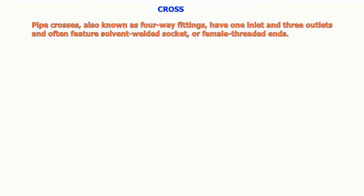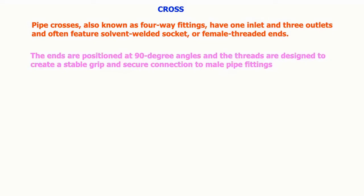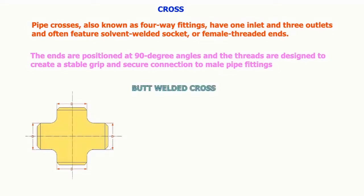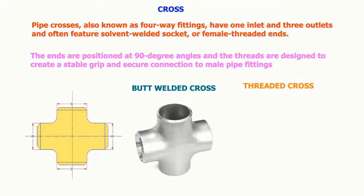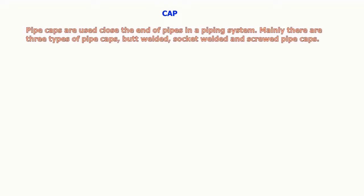Pipe crosses, also known as four-way fittings, have one inlet and three outlets and often feature solvent-welded socket or female-threaded ends. The ends are positioned at 90 degree angles and the threads are designed to create a stable grip and secure connection to male pipe fittings.